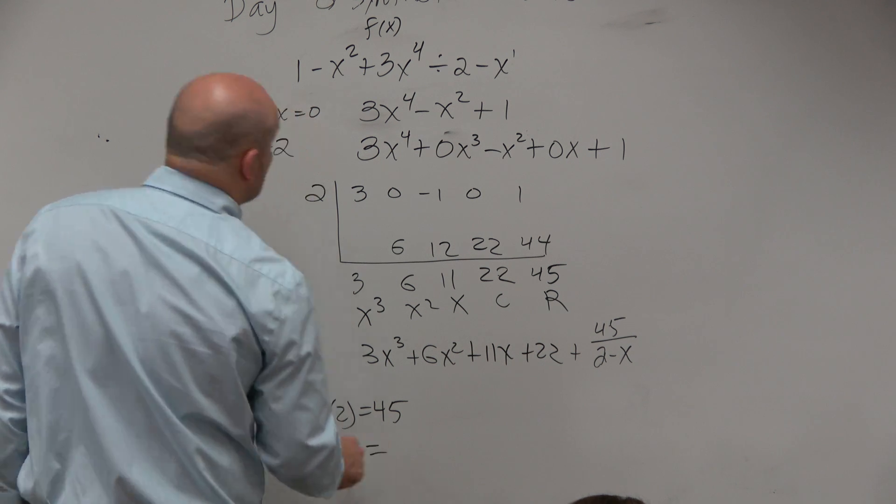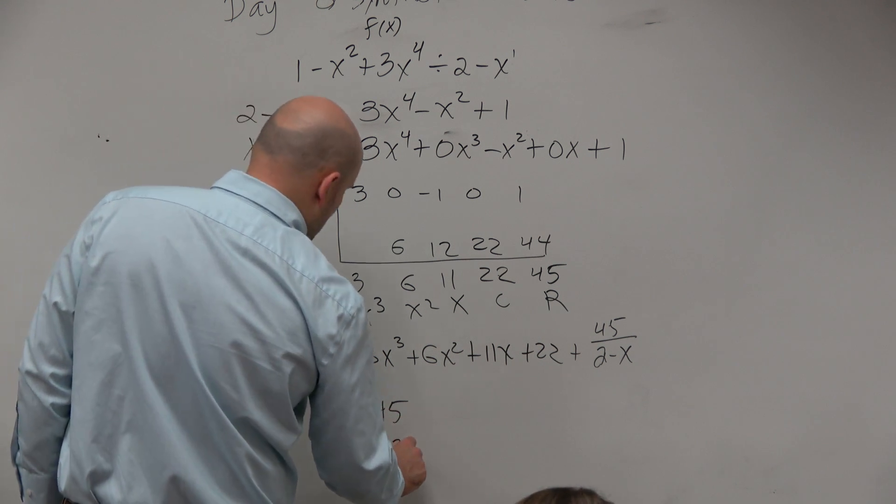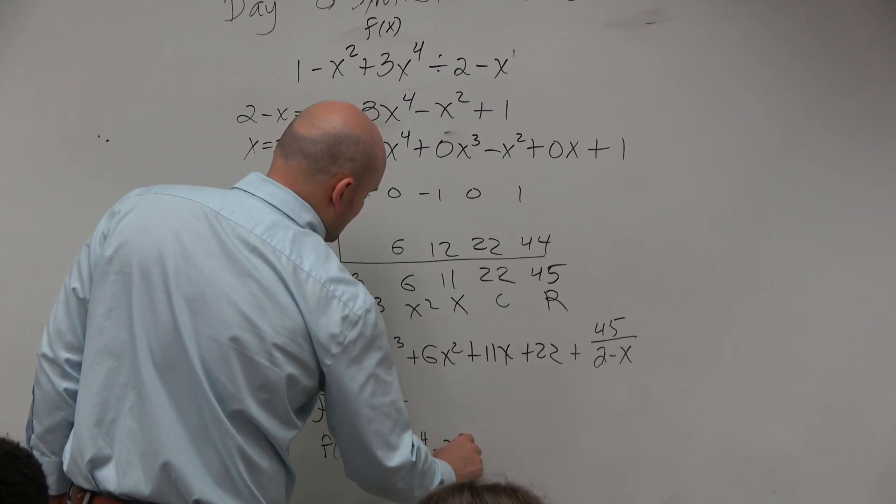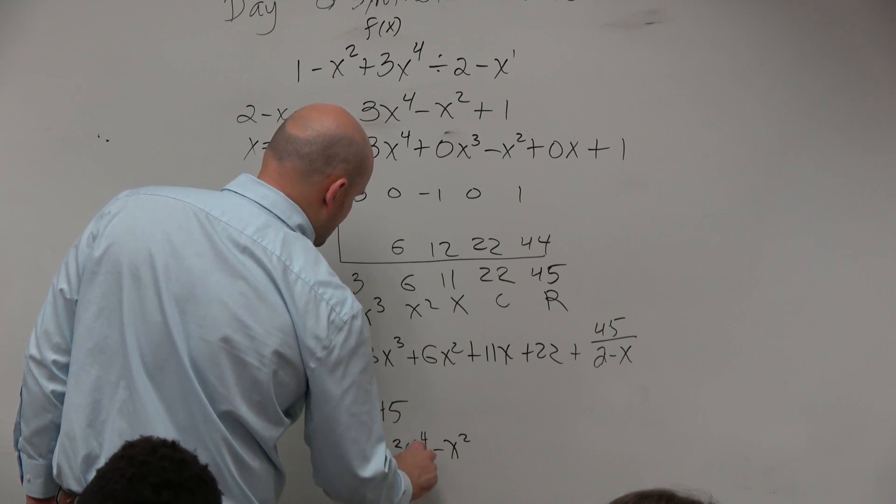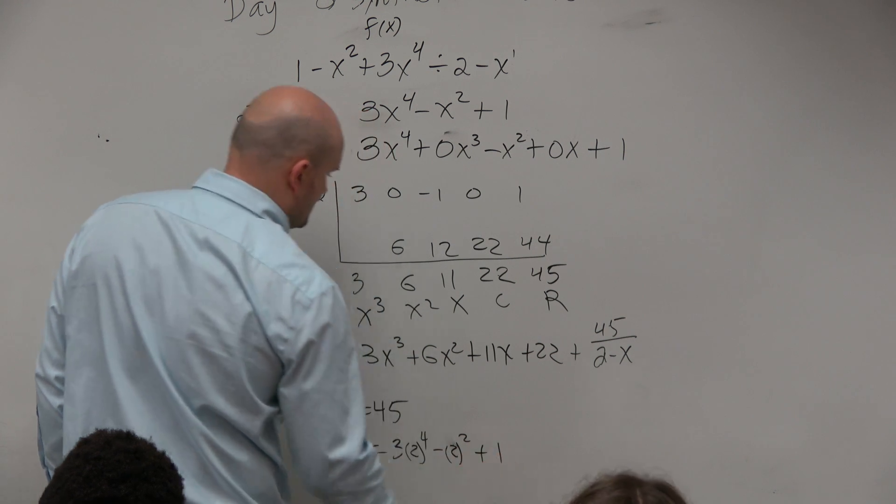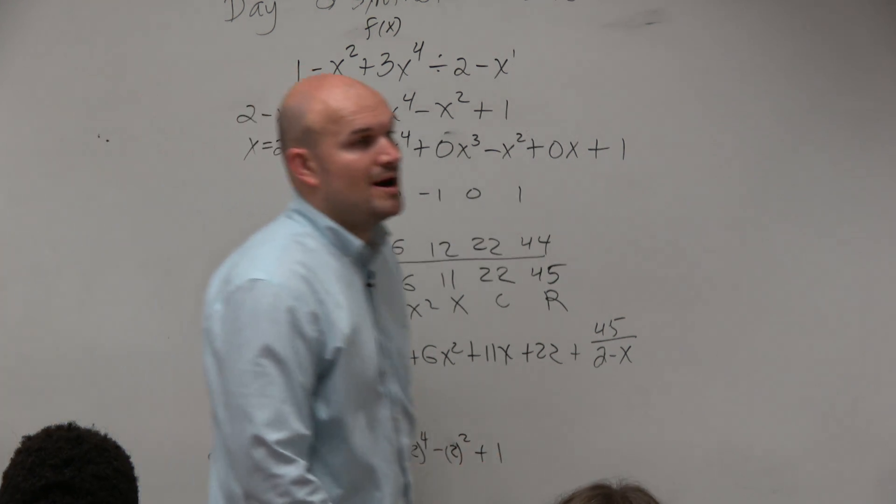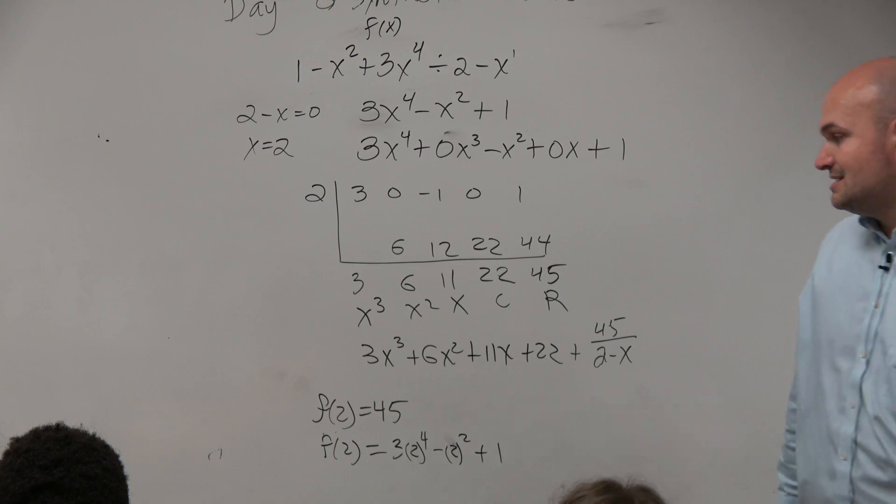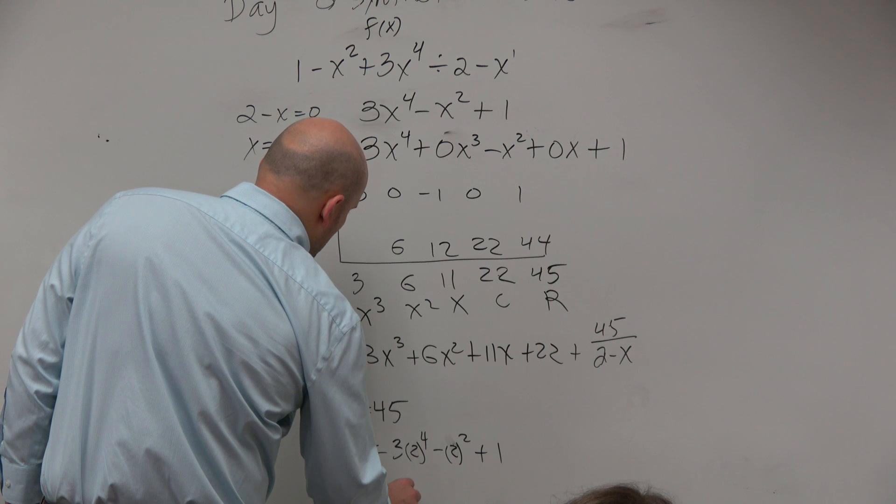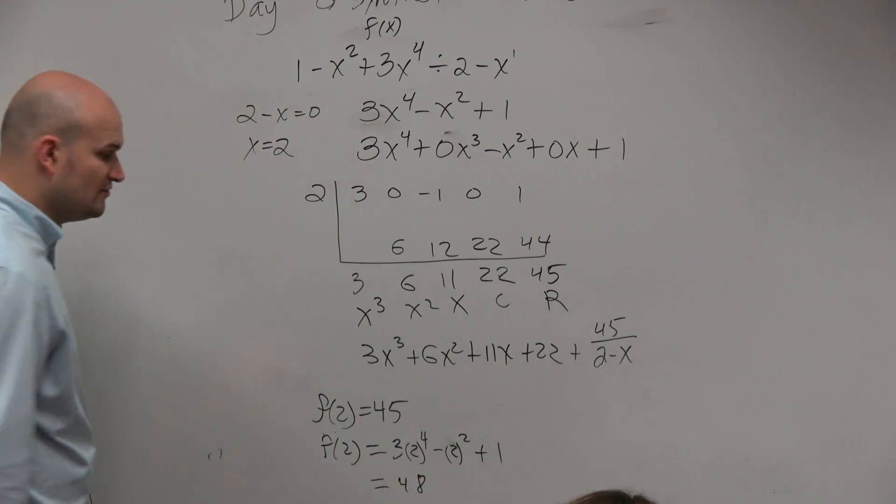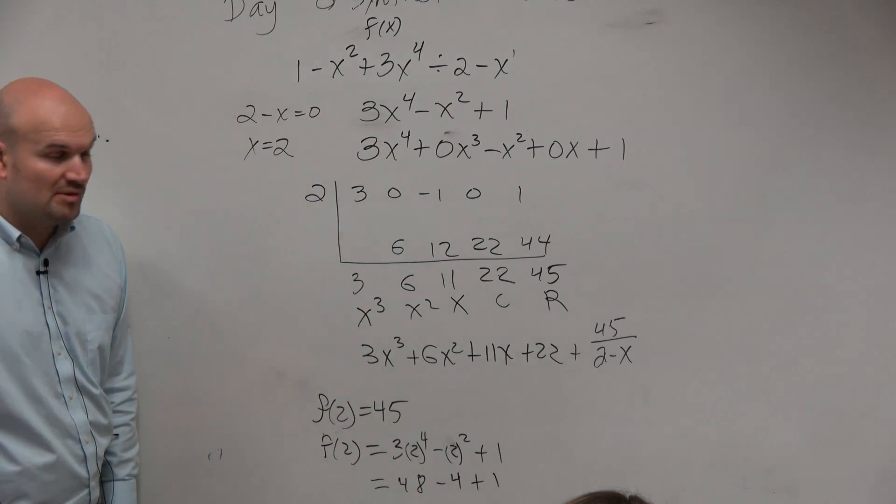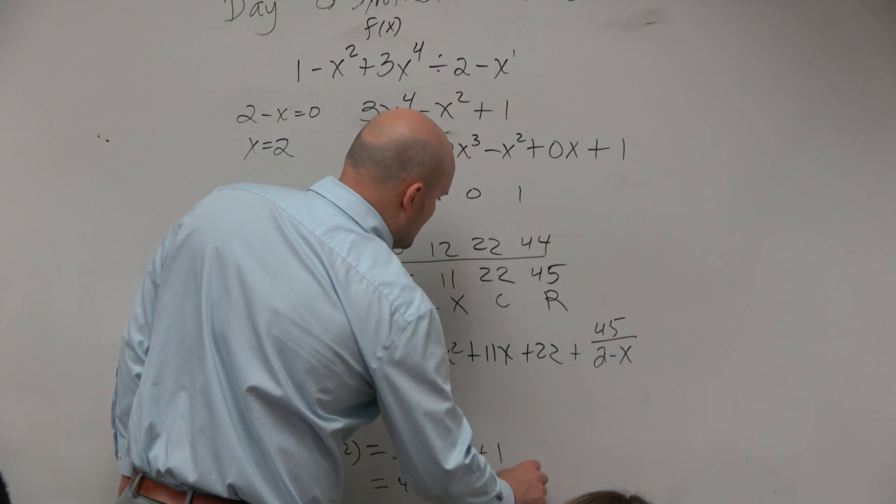So f of 2 equals 3x to the 4th minus x squared, you've got to plug in the 2, plus 1. OK? So 2 to the 4th power would be 16, times 3 is 48. 2 squared is 4, plus 1. Well, 48 minus 4 is 44, plus 1 is equal to 45.